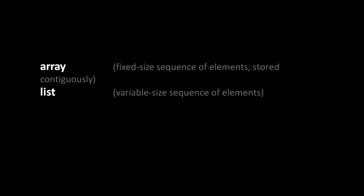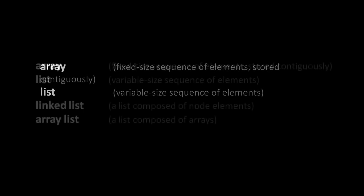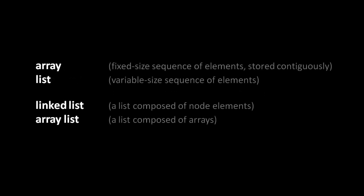A list, in contrast, is a variable-sized sequence of elements — the number of elements can actually change through the lifetime of the list. Likewise, the elements of the list need not be all of the same type and size; they can be heterogeneous. The two most common ways to implement a list are what's called a linked list, which is a list composed of nodes, or an array list, where the list is made up of one or more arrays.